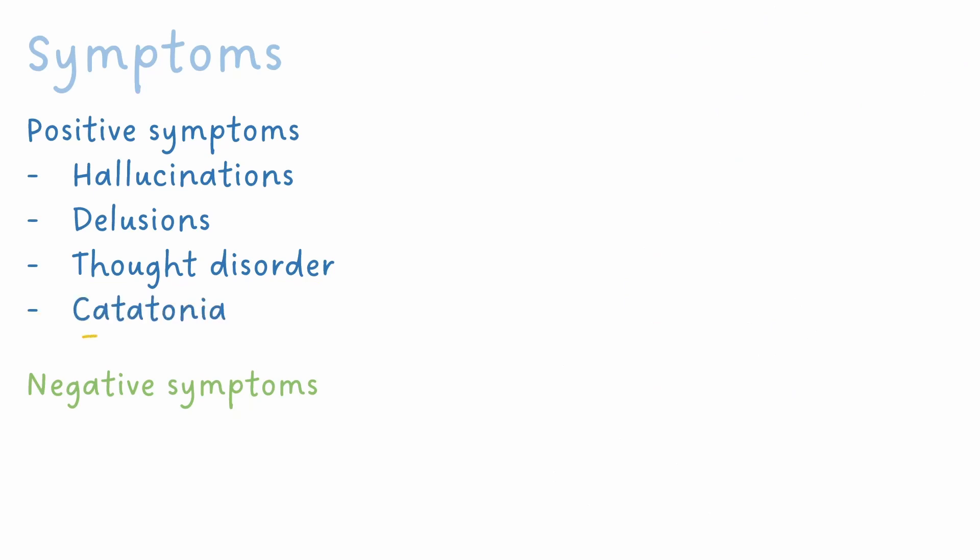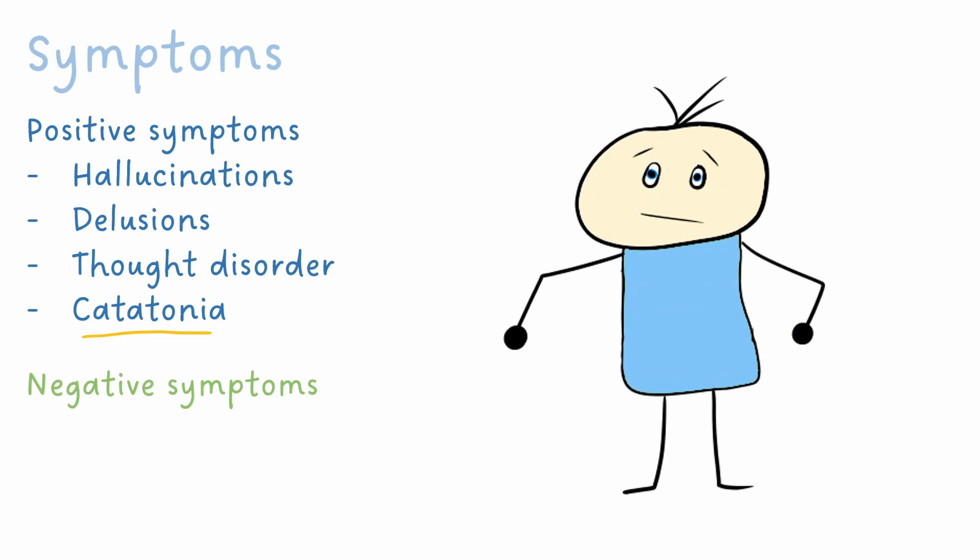Catatonia is a syndrome of abnormal movements and behavior associated with severe mental illness. There are many subtypes of catatonia, but one way in which it can present is through patients spending prolonged periods of time sitting or standing in the same position with no movement.